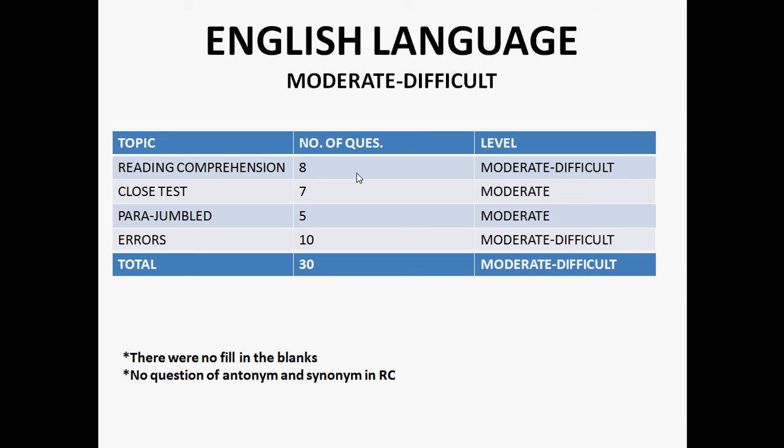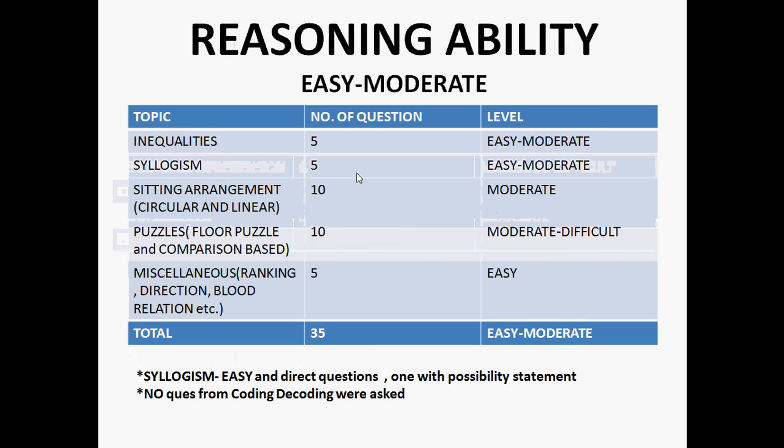There were no questions of antonyms and synonyms in reading comprehension and no fillers or fill in the blanks. Reasoning ability was easy to moderate. There were five questions of inequalities and five of syllogism - both were easy to moderate. Ten questions were from sitting arrangement at moderate level - one was circular and another was linear arrangement.